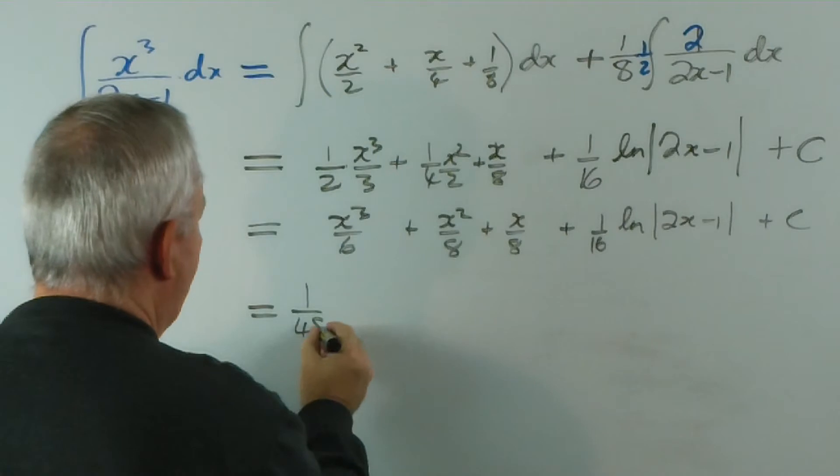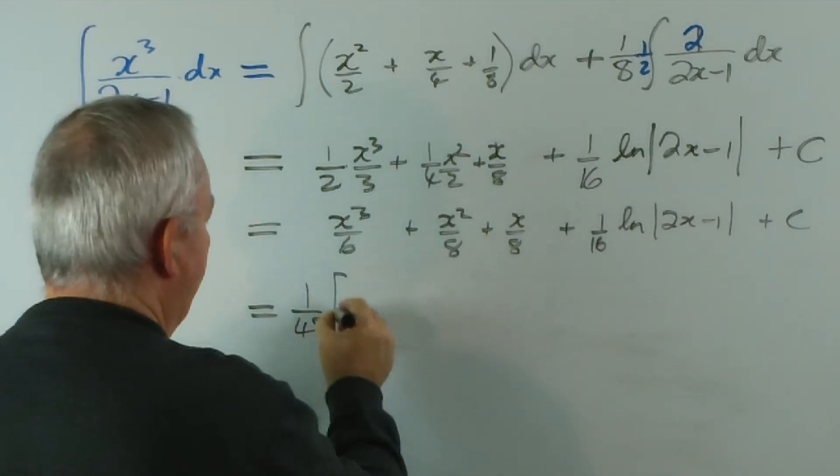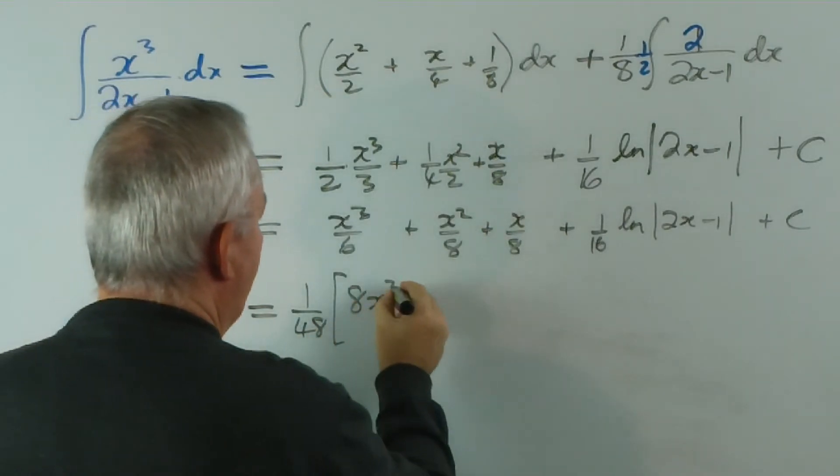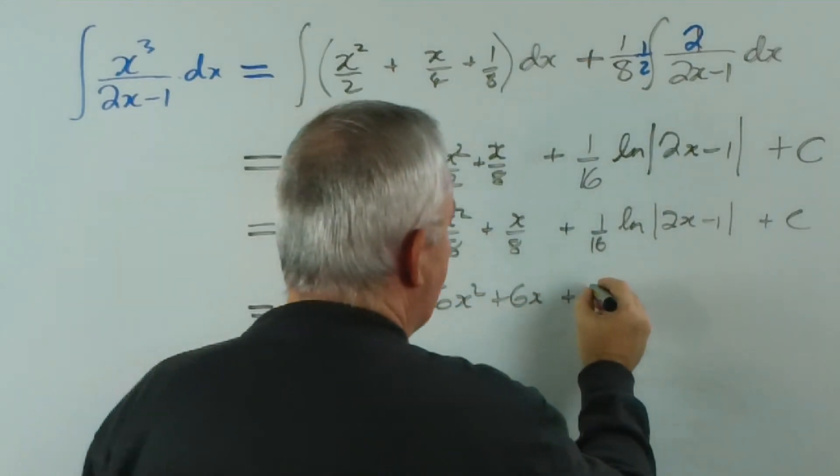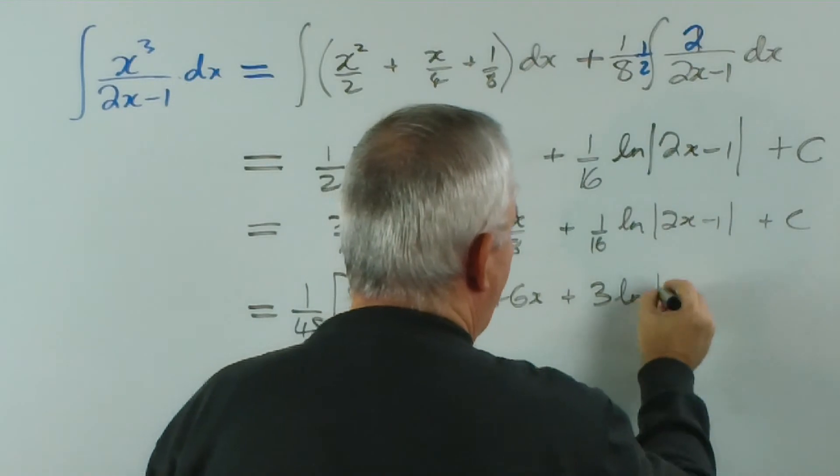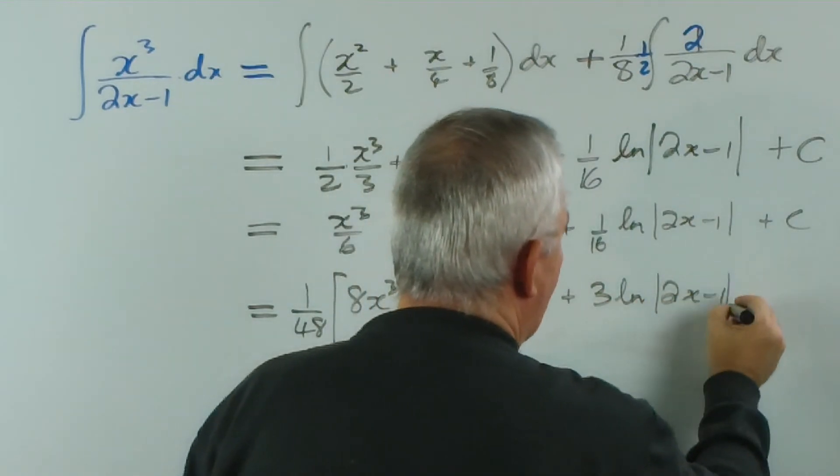So, 1/48 of 8x cubed plus 6x squared plus 6x plus 3 log 2x minus 1.